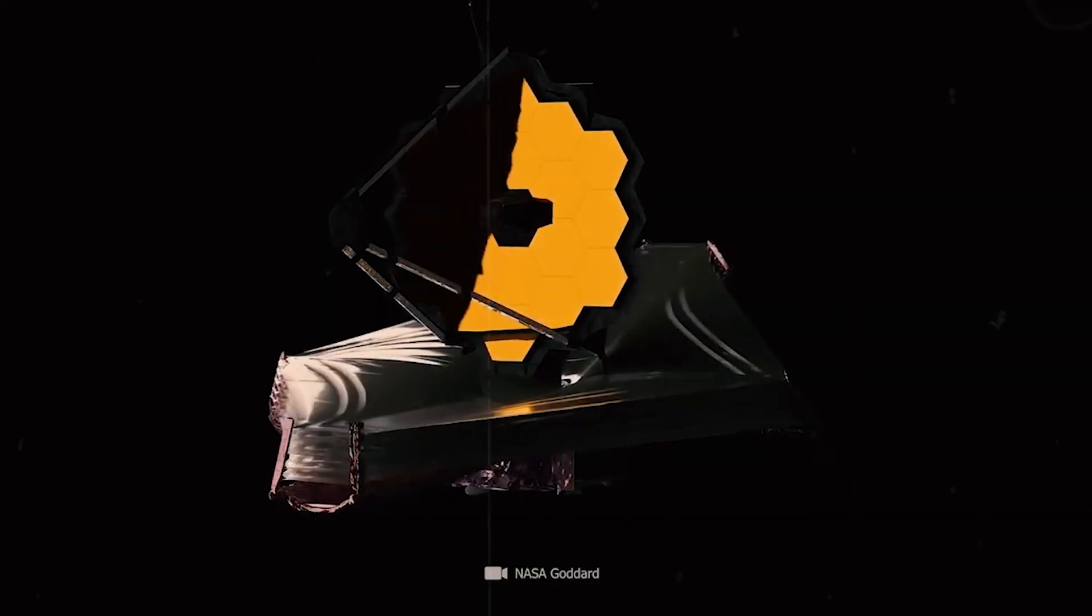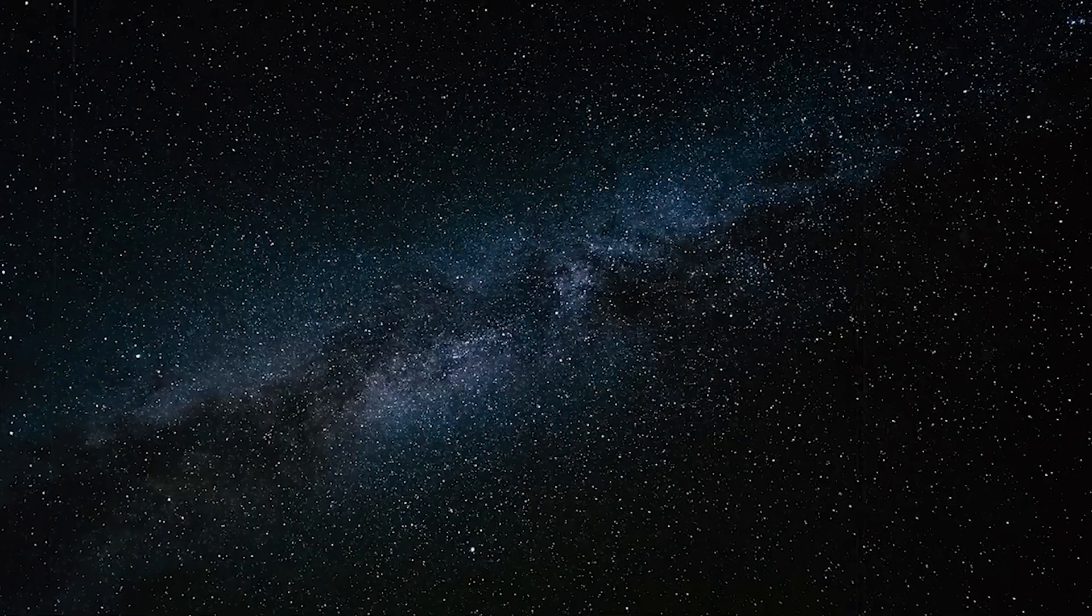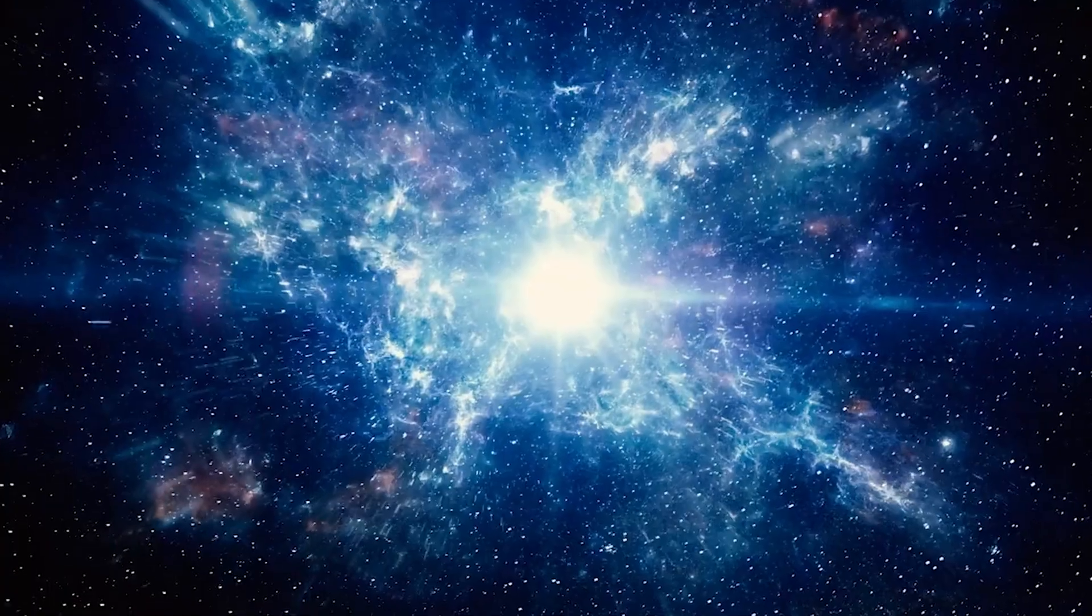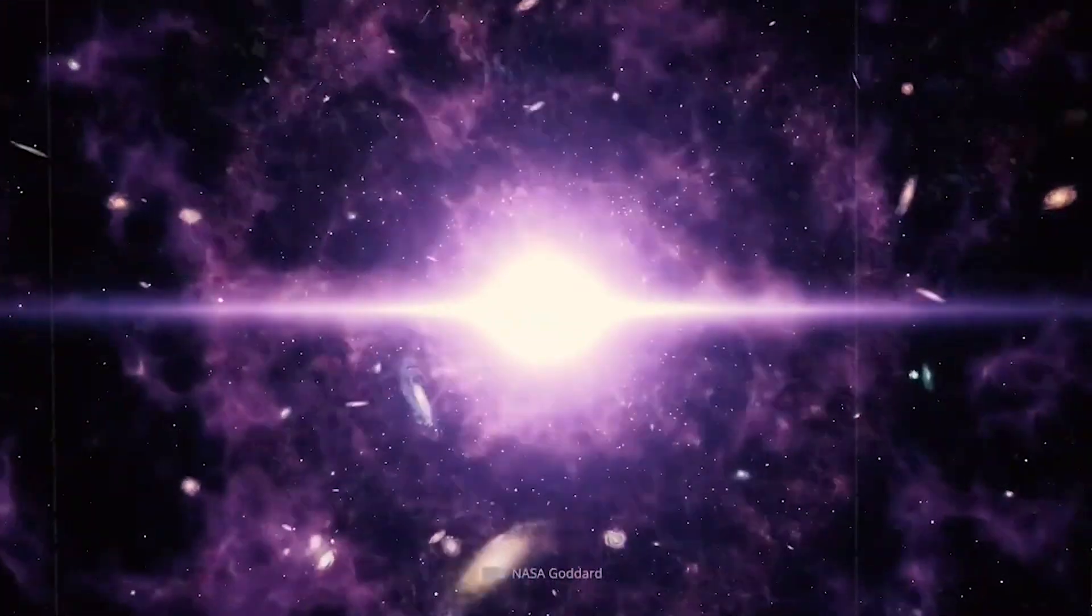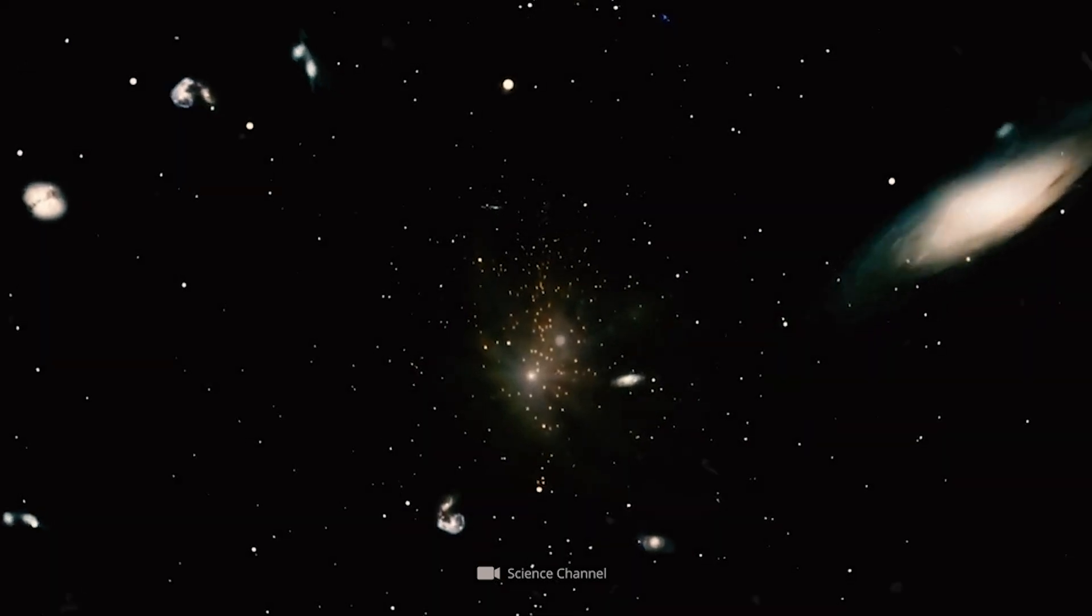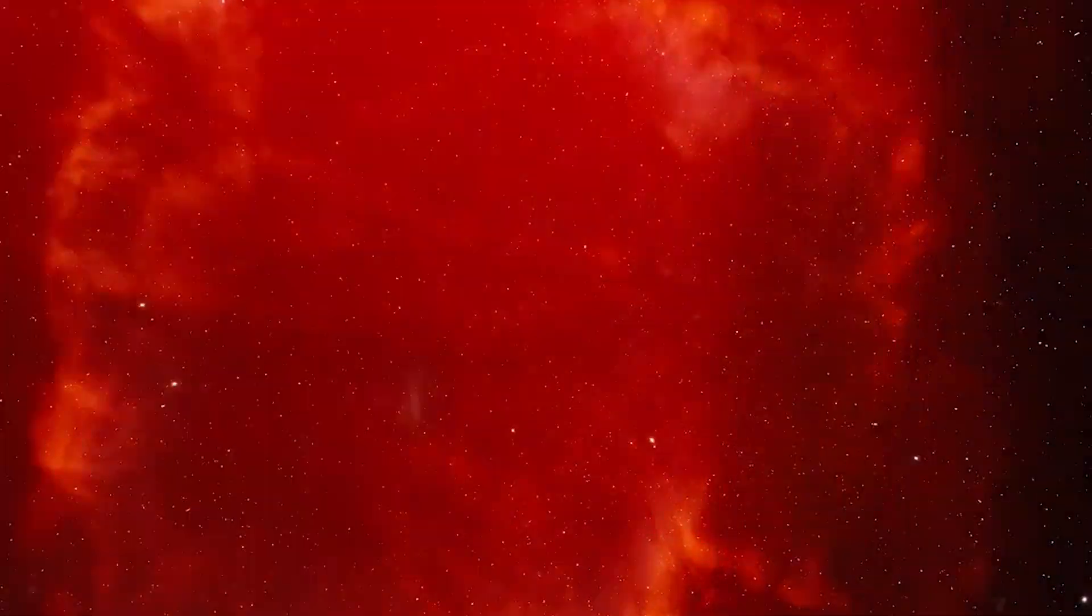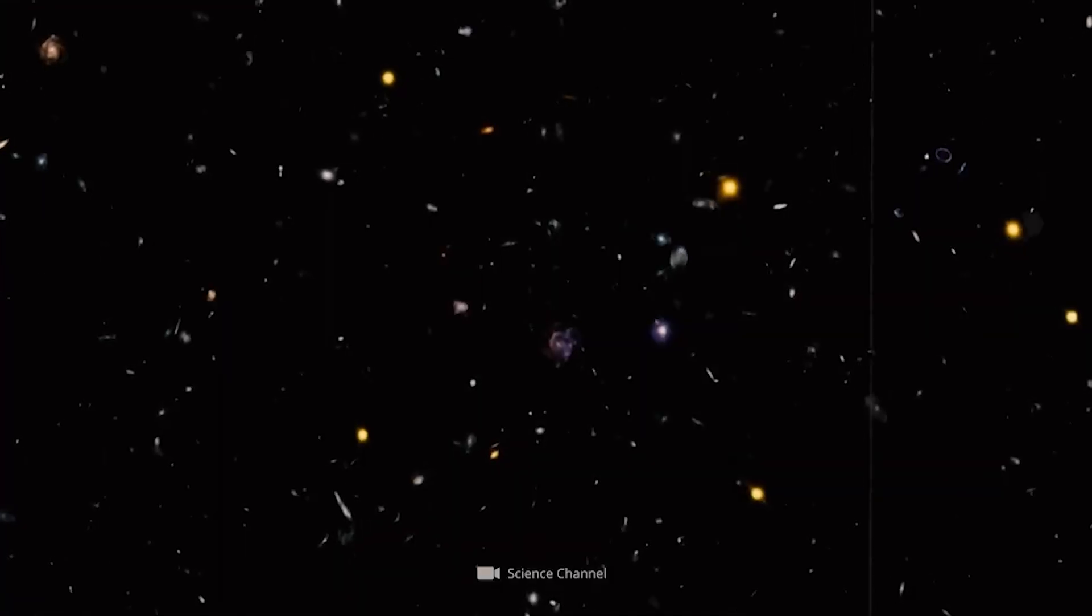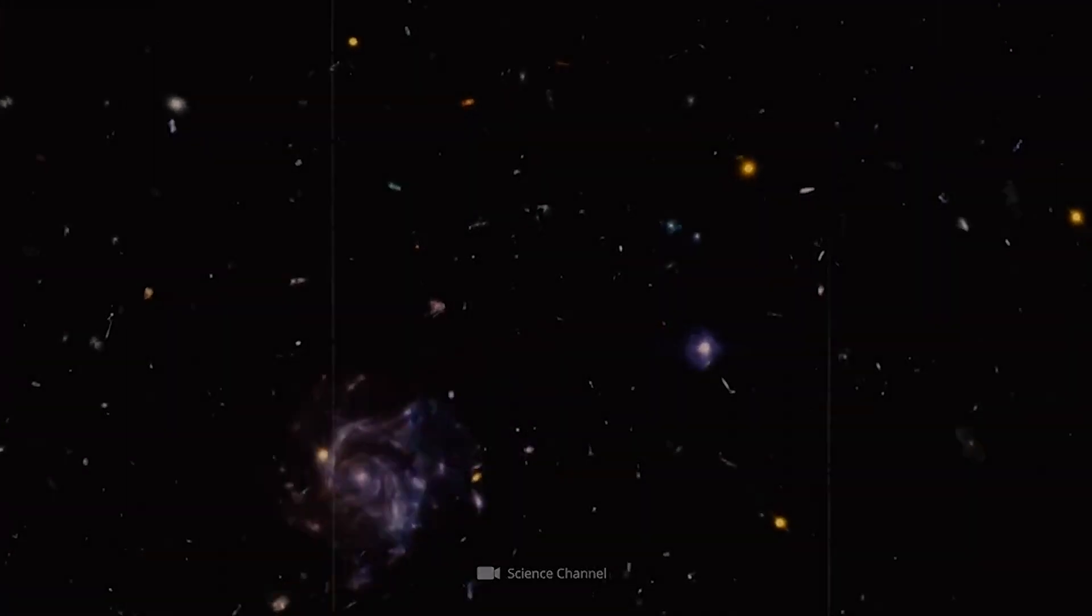James Webb shows us that the universe could be twice as old as previously thought. The evidence is staggering, and new theories show that we have made a crucial miscalculation so far. The universe is not 13.8 billion years old at all. It is 26.7 billion years old or even older. The knowledge about the true age of the universe has basically always been there, but no one gave the correct theories the attention they deserved.